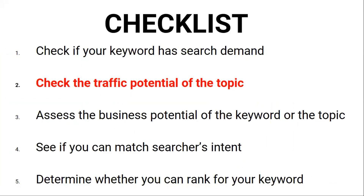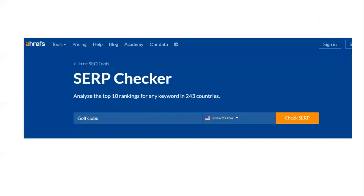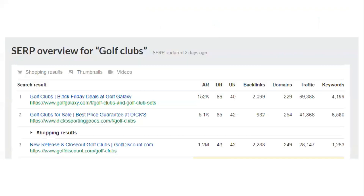The next point on this checklist is to see if they have traffic potential. Traffic potential is a much more reliable metric than search volume because not all searches result in clicks. At the end of the day, we want traffic, not just searches. To check the traffic potential of a topic, you need to look at the top ranking pages and see how much traffic they are getting. You can use the free version of the SERP checker tool and search for 'golf clubs.' You can see the top page gets around 68,000 monthly search visits from the US, which shows that there is traffic potential.